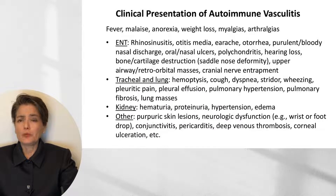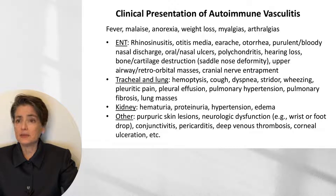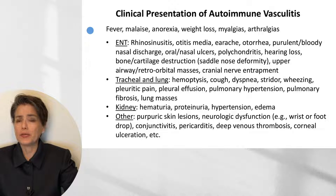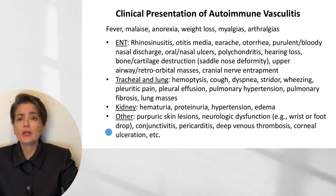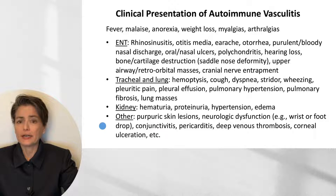So why are autoimmune disorders so challenging to diagnose? They can present with a wide range of signs and symptoms. Classically, we'll talk about fever, malaise, anorexia, weight loss, myalgias, and arthralgias — and these are all somewhat nonspecific. But when you look at the full spectrum of possibilities, which vary depending on which type of autoimmune vasculitis a patient may have, you can see there are a lot of different signs and symptoms that can lead you to a variety of different differential diagnoses.